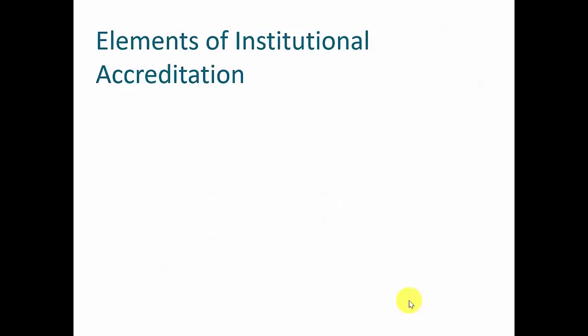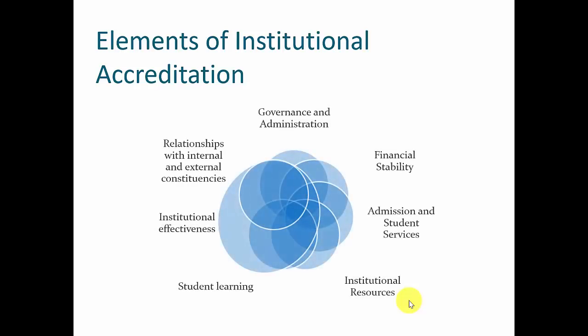The elements of institutional accreditation include: governance, administration, financial stability, admission and student services, institutional resources, student learning, and institutional effectiveness, among a few others.